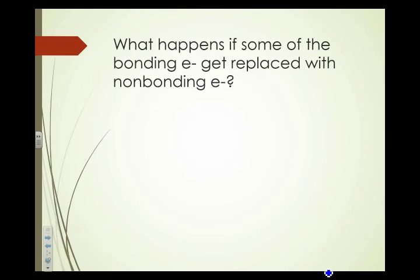So what happens if some of those bonding electrons get replaced with nonbonding electrons? Remember we said that nonbonding electrons take up more space and they have stronger repulsions. So, take up more space because they have stronger repulsive forces than the bonding electrons.